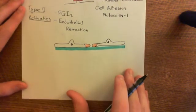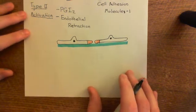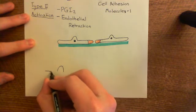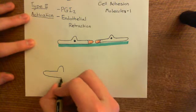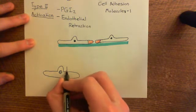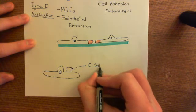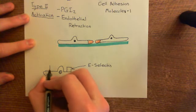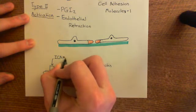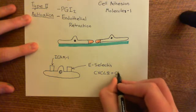Another result of type 2 activation is increased neutrophil extravasation, because you now start synthesising new proteins involved in neutrophil recruitment. Firstly, you increase production of ICAM-1, which was already constitutively expressed but is now upregulated. Then you start making a whole new protein known as E-selectin, within the selectin family of cell adhesion molecules. You also start producing a chemokine known as CXCL8, the CXC chemokine ligand 8.